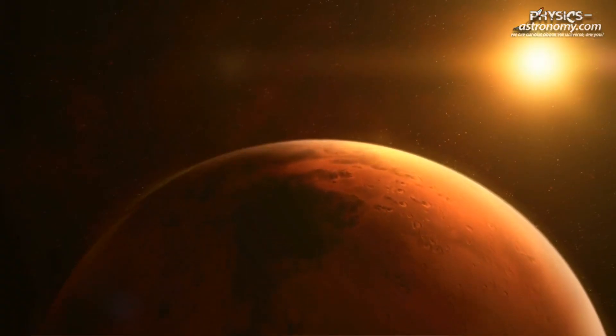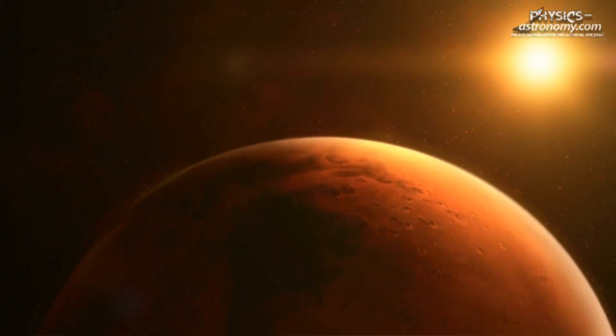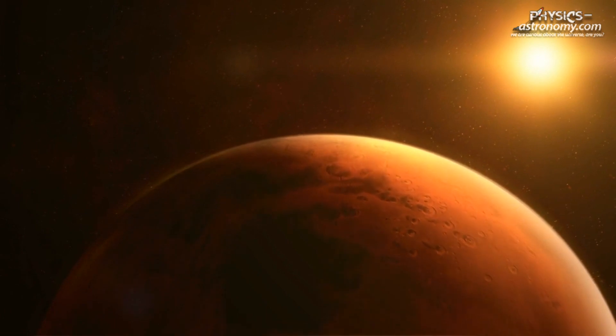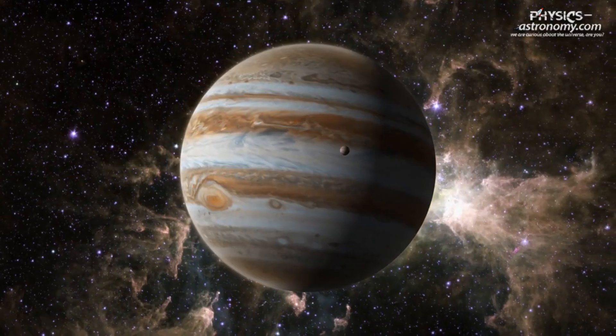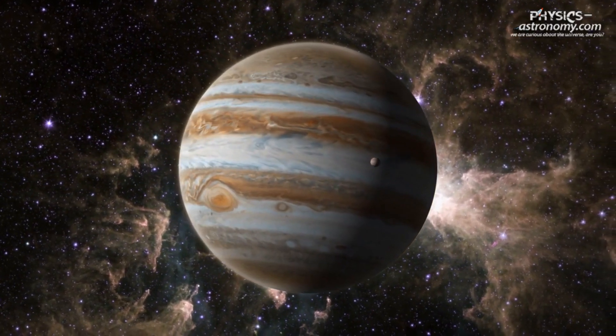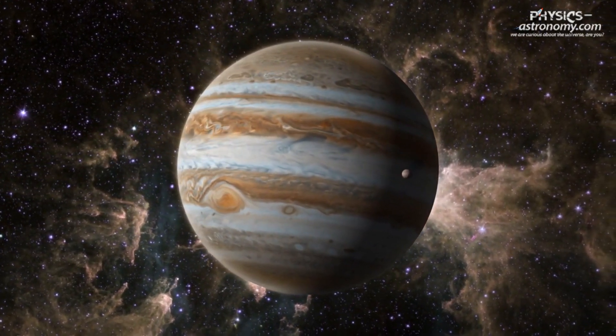The existence of this planet defies our understanding of stellar evolution and planetary survival, making it a fascinating subject of study. Hala is a Jupiter-like planet that orbits the red giant star Beakdou.